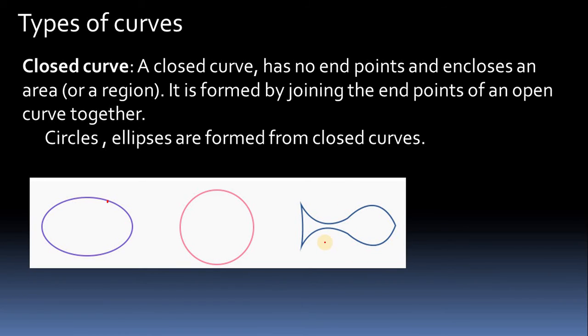Circle, rectangle, quadrilateral, polygon — whatever shape you draw, they belong to the category of closed curve.